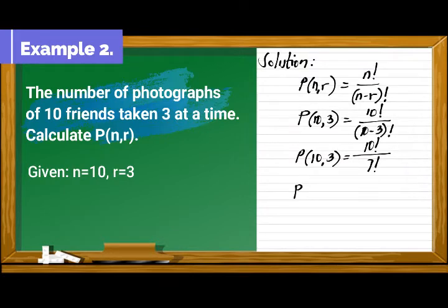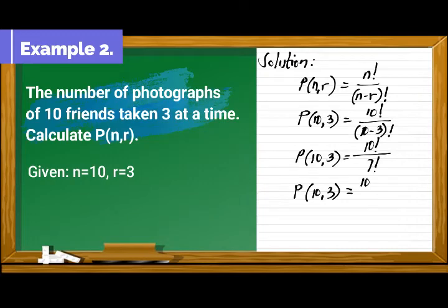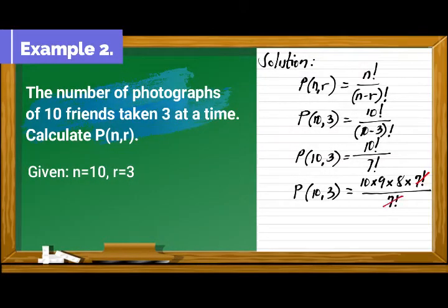Next, let's simplify 10 factorial divided by 7 factorial. Divide out 7 factorial. Therefore, our answer would be 10 times 9 times 8 which is equivalent to 720.